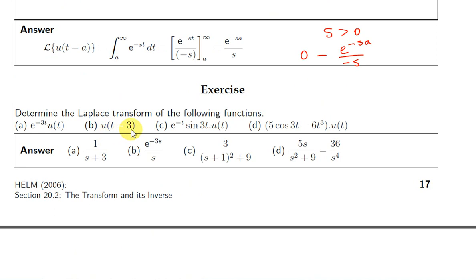To get L{u(t-3)}, we look at this result. Replace a with 3. So we get e^(-3s)/s.